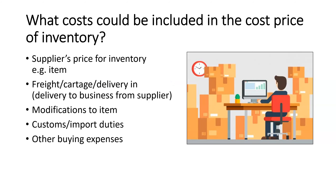So what costs should be included in the cost price of inventory? First, the item itself — for example, the television. We can also include delivery, sometimes called freight or cartage in — this is delivery from the supplier to us; delivery out is treated differently. There might also be modifications to the item, such as adding your own logo before selling it. We could also have customs or import duties, which are tariffs for bringing items in from overseas, and even miscellaneous buying expenses. These are the things to consider when calculating the cost price of inventory.